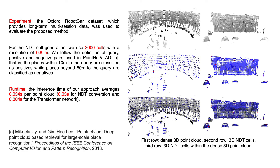In our experiment, the Oxford RobotCar dataset is used for learning and evaluation. For the NDT cell generation, we convert the dense point cloud map to NDT cells and downsample to 2000 cells with a resolution of 0.8 meters. We follow the definition of query, positive, and negative pairs used in the PointNetVLAD paper — that is, places within 10 meters to the query are classified as positives, and places beyond 50 meters are classified as negatives.